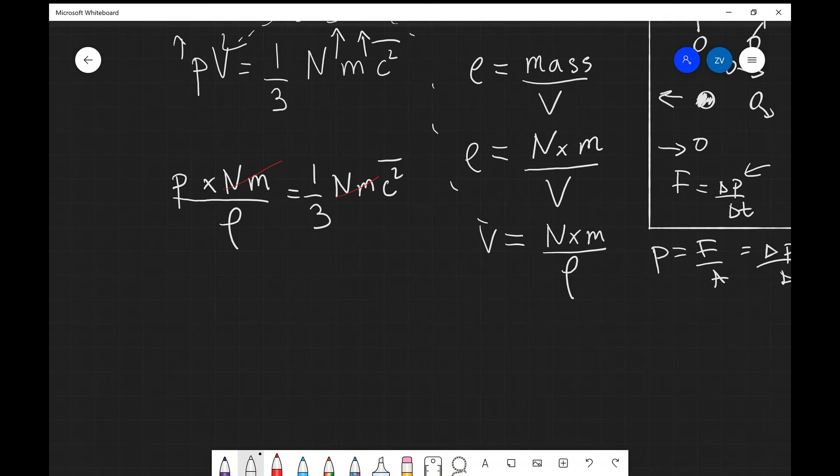We can just rearrange for the pressure, so we see that pressure is going to equal one-third multiplied by the density ρ multiplied by the mean square speed c̄².